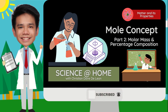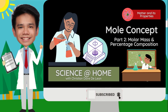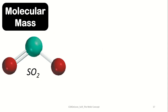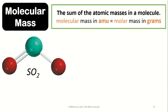But first, let us look at the idea of molecular mass. When we talk about molecular mass, this refers to the sum of the atomic masses within a given molecule, in particular within covalent compounds. Molecular mass is expressed in AMUs or atomic mass units, while the molar mass is usually expressed in grams.